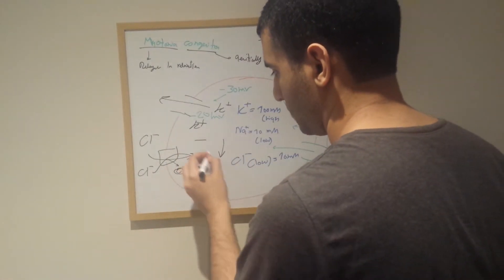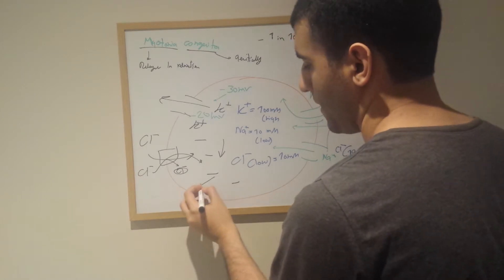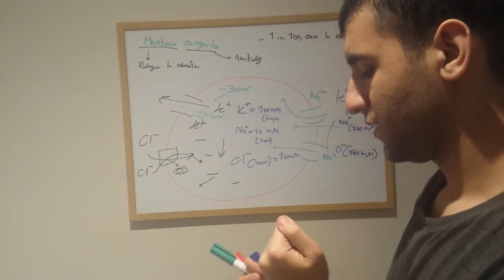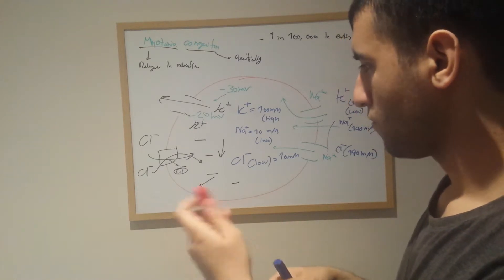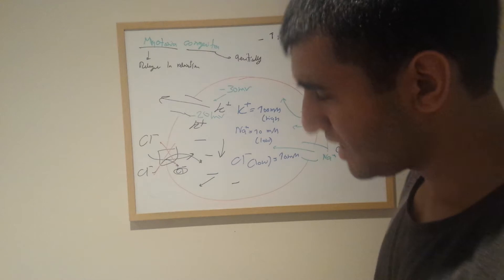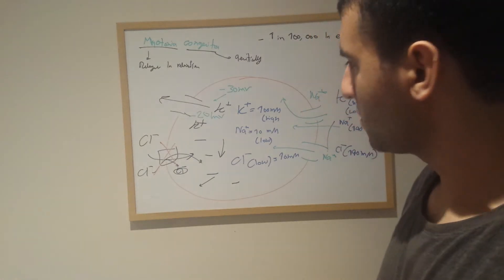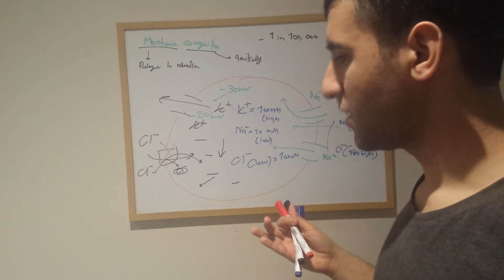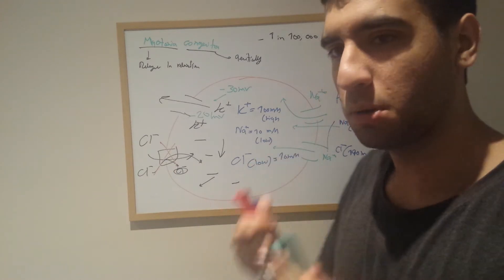People with myotonia congenita, as you recall, if you don't have this channel, what it essentially means is that we are not going to make it more depolarized, you're going to have depolarization for a prolonged amount of time.